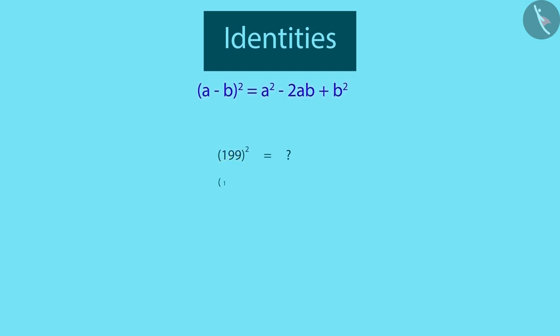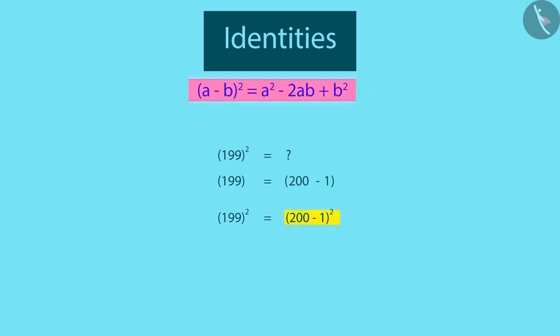Can you tell what those two numbers would be? They would be 200 and 1. So, 199 can be written as 200 minus 1. Now, 199 raised to the power of 2 will be equal to 200 minus 1 raised to the power of 2. Now, we can use this identity to expand 200 minus 1 raised to the power of 2.